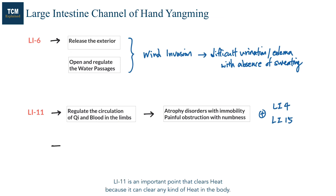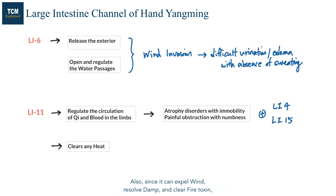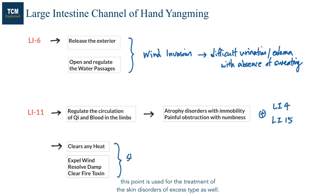LI11 is an important point that clears heat — it can clear any kind of heat in the body. Since it can also expel wind, resolve damp, and clear fire toxin, this point is used for the treatment of skin disorders of excess type as well.